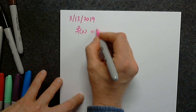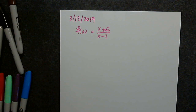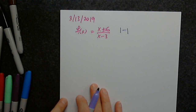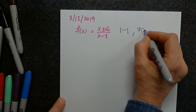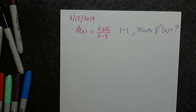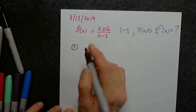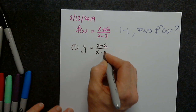We have a function f(x) = (x + 6) / (x - 3). We are told from the get-go that this function is one-to-one, and therefore we are asked to find f inverse. So if the function is not one-to-one, there is no point in asking to find the inverse. Step 1: we replace f(x) by y, so y = (x + 6) / (x - 3).